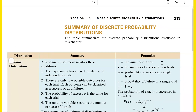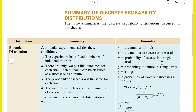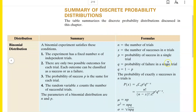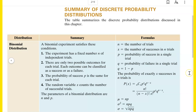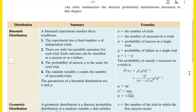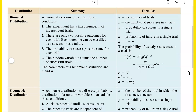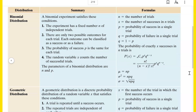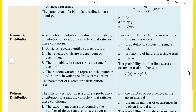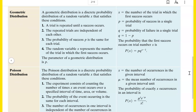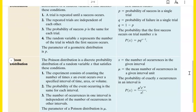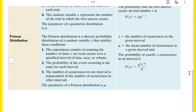Here's a nice table summarizing the three most common discrete probability distributions we've talked about: the binomial distribution, the geometric distribution, and the Poisson distribution, each with a summary.